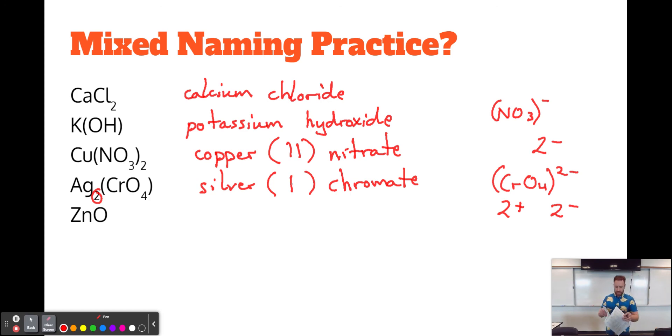The next one involves zinc. Let's see where zinc is in the periodic table. That's also a transition metal. So we're going to need a Roman numeral. But this time it's not a polyatomic ion. It's just oxygen. So it's going to be oxide because oxygen is the anion, and when it's a monoatomic anion, you change the ending to ide. So we've got zinc oxide, but what's the Roman numeral?